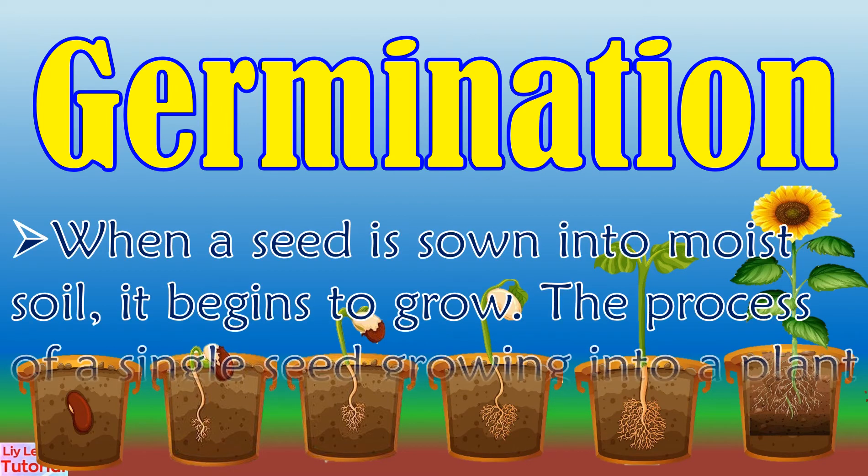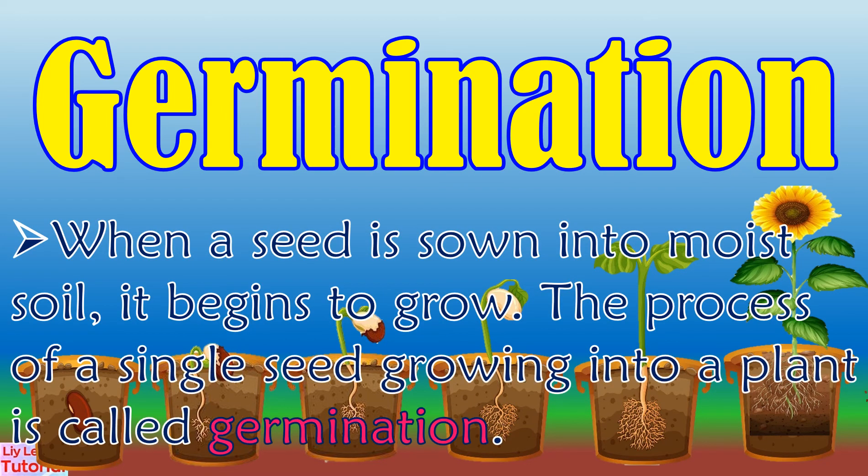When a seed is sown into moist soil, it begins to grow. The process of a single seed growing into a plant is called germination.